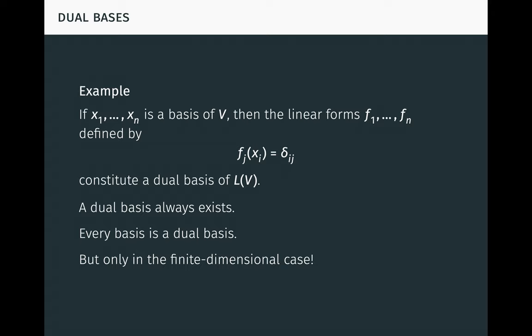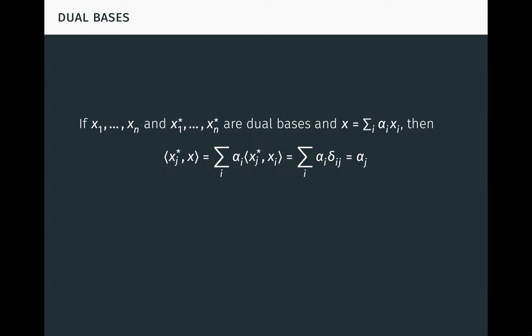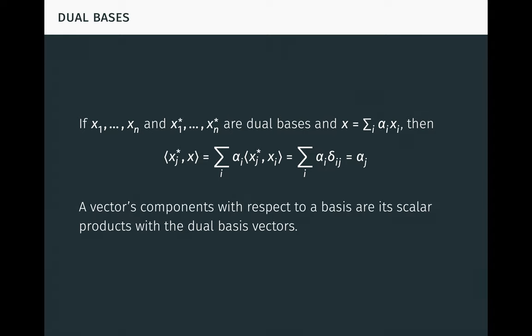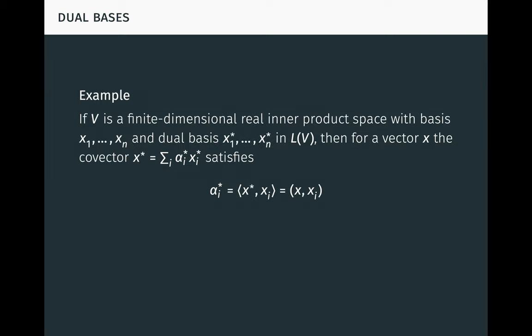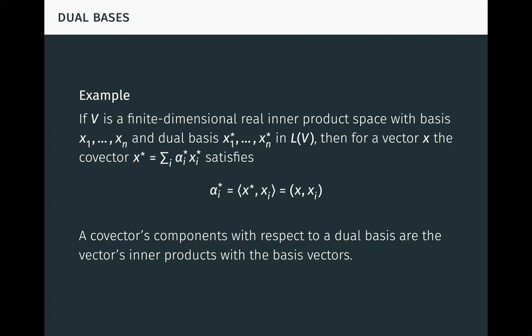These facts don't carry over to the infinite-dimensional case. If x1 to xn and x-star-1 to x-star-n are dual bases, and x is the sum over i of alpha-i times xi, then x-star-j times x is just alpha-j. This means a vector's components with respect to a basis are just its scalar products with the dual basis vectors. As an example, if V is a finite-dimensional real inner product space with basis x1 to xn and dual basis x-star-1 to x-star-n in LV, then for a vector x, the co-vector x-star equals the sum over i of alpha-star-i x-star-i, satisfying alpha-star-i equals the scalar product of x-star and xi, which is just the inner product of x and xi. In other words, a co-vector's components with respect to a dual basis are just the vector's inner products with the basis vectors.